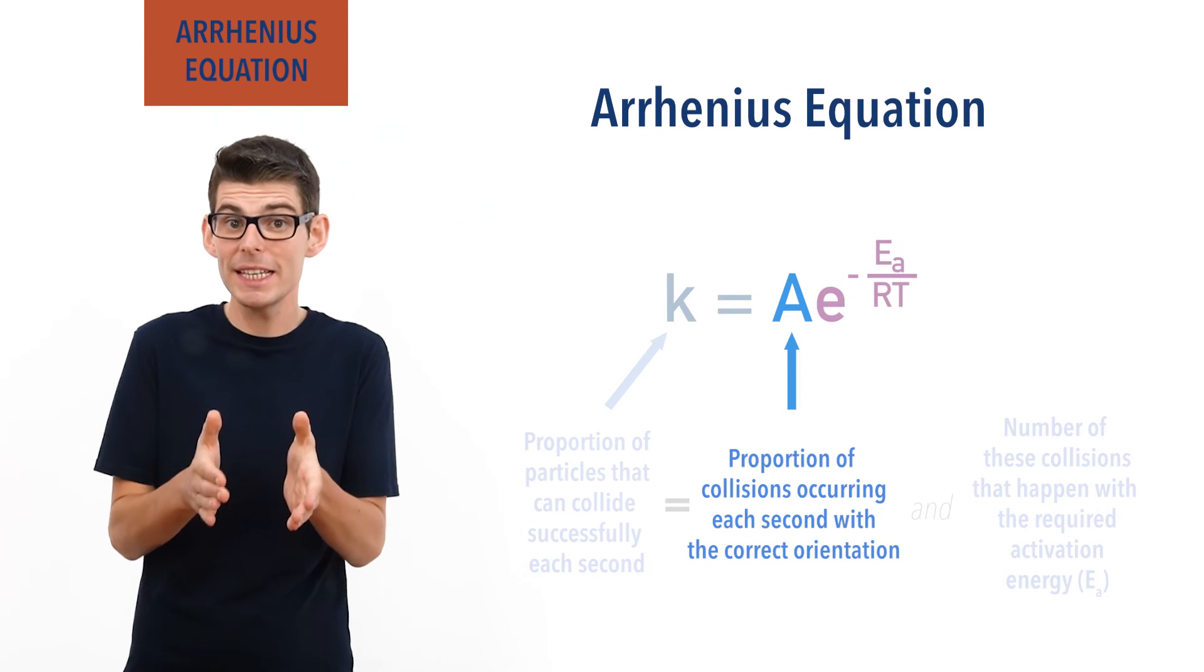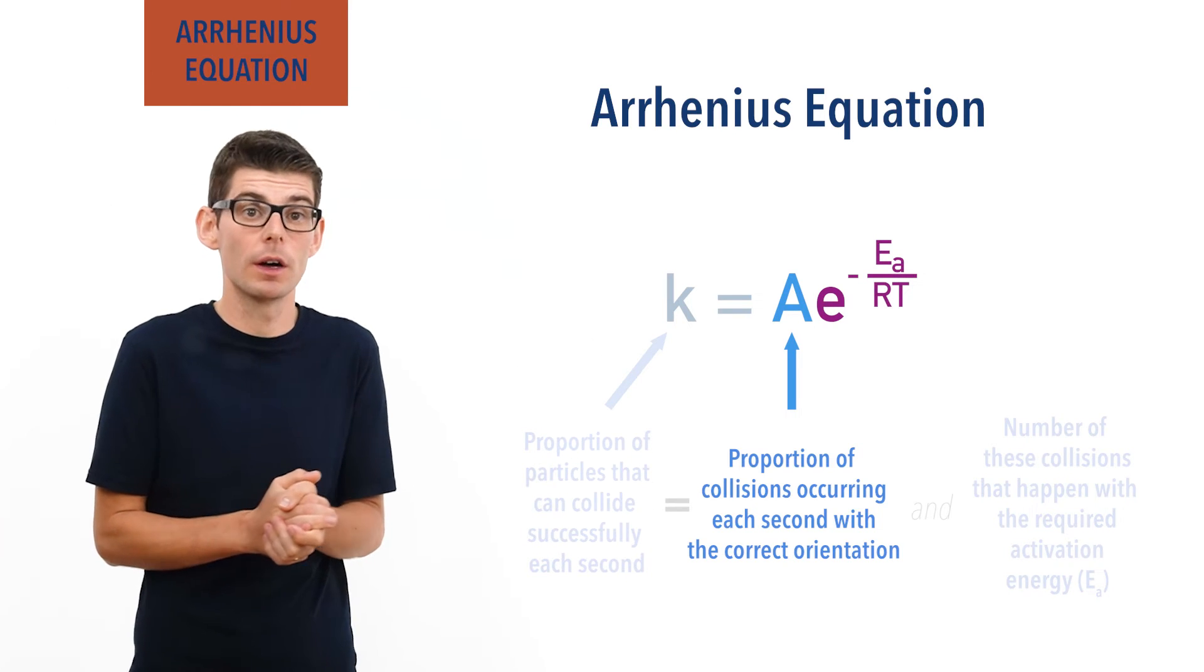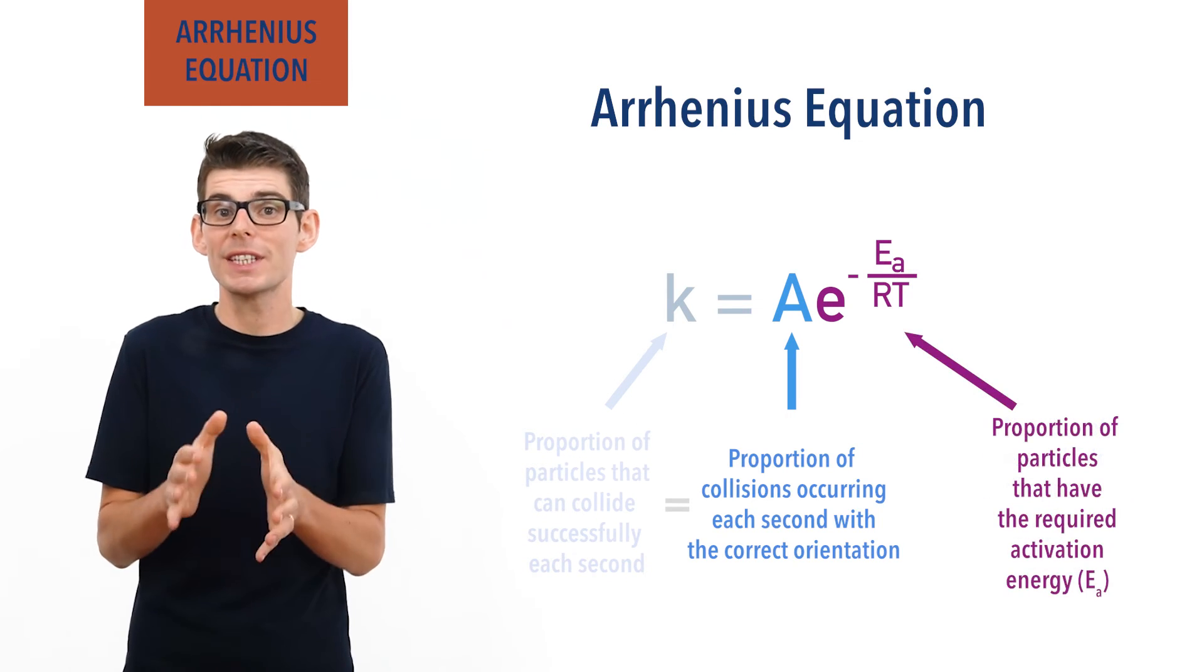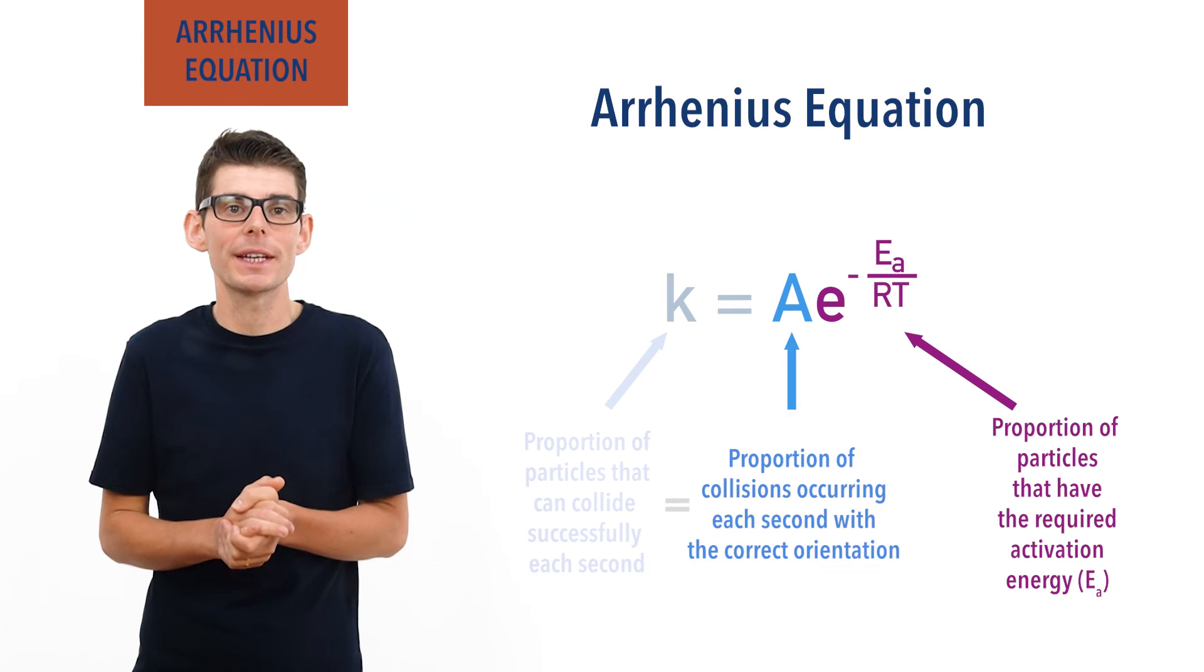The second part, e to the power minus Ea over RT, tells us the fraction of reactant particles that have at least the required activation energy.